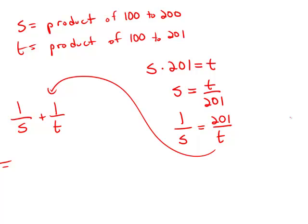1 over s plus 1 over t, well that is 201 over t plus 1 over t. I'm just using the form where I've written s in terms of t.